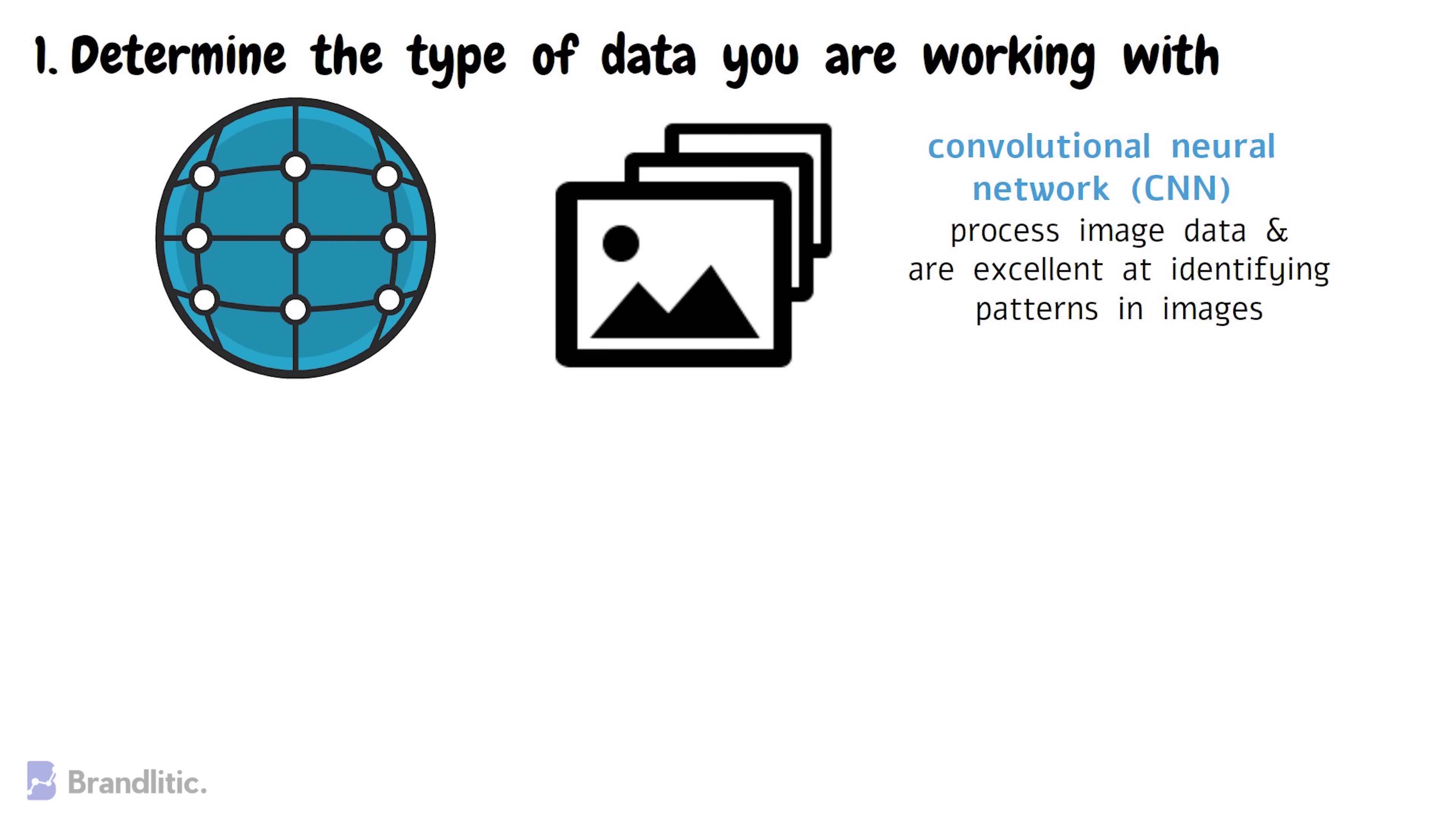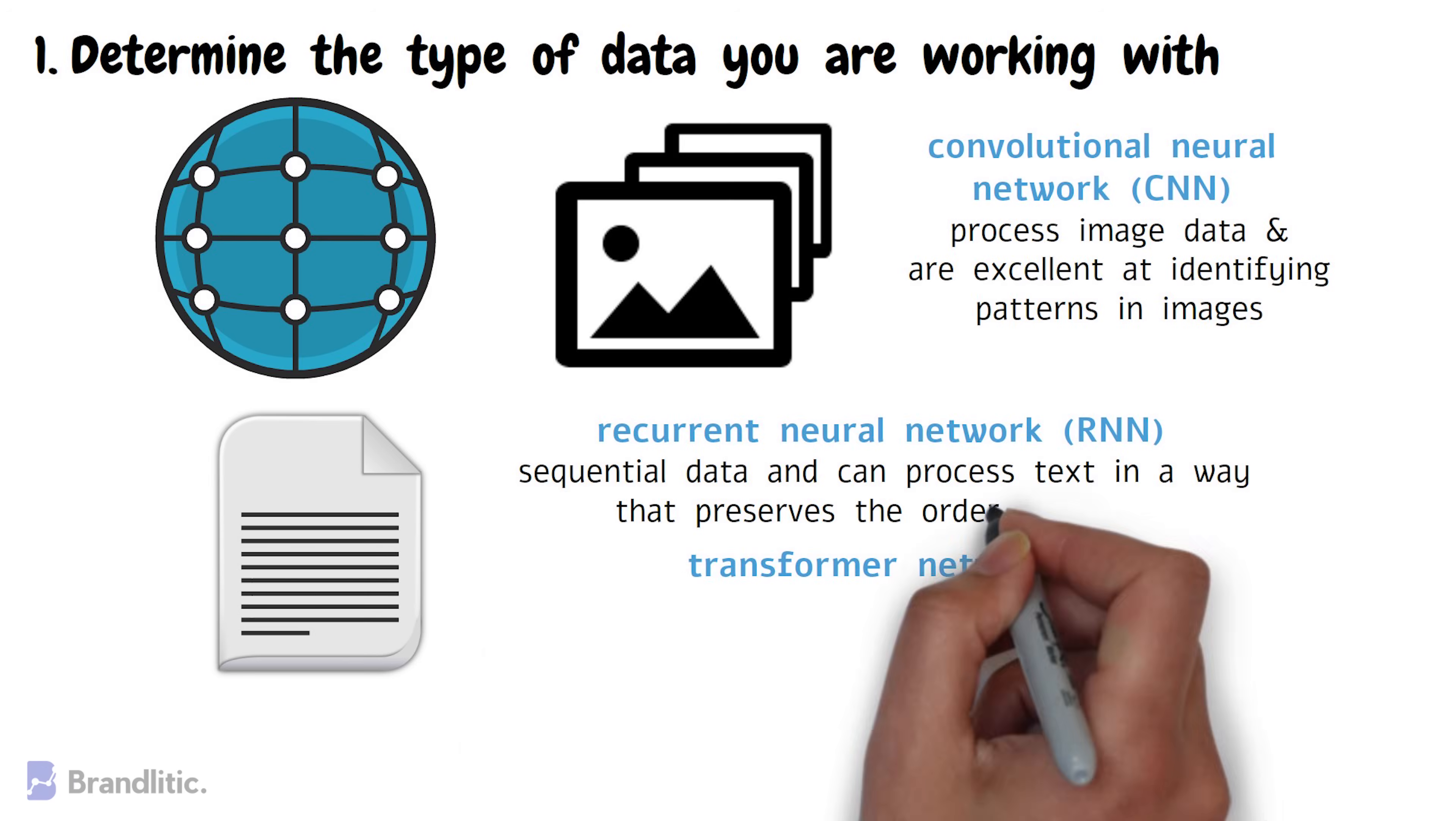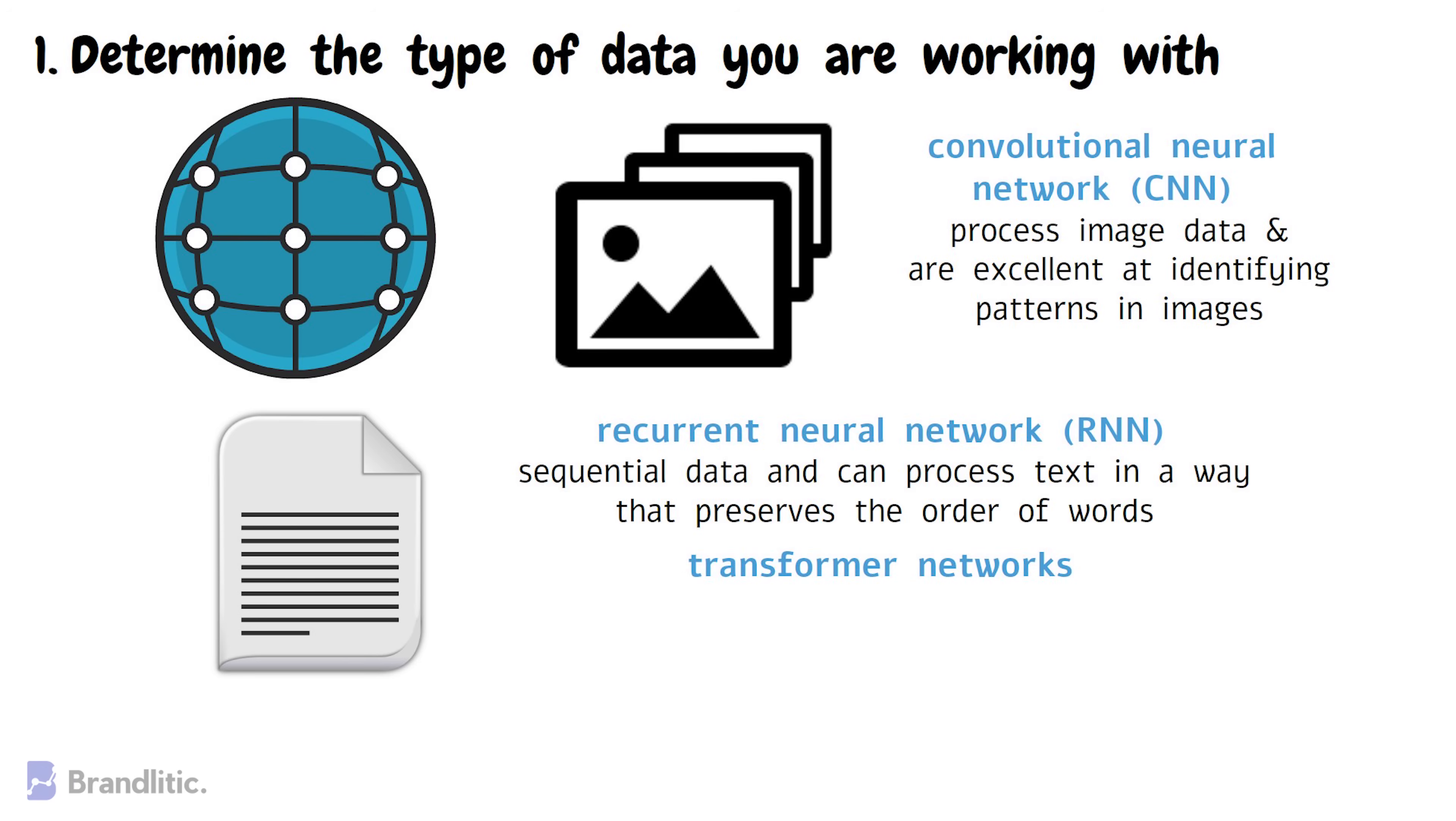On the other hand, if you're working with text data, a recurrent neural network or RNN or a transformer network might be a better choice. As RNNs are specifically designed for sequential data and can process text in a way that preserves the order of words. Transformer networks are great at processing large amounts of text data and have been used in natural language processing applications.